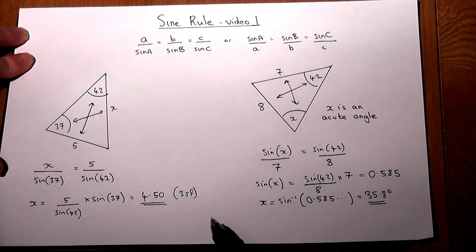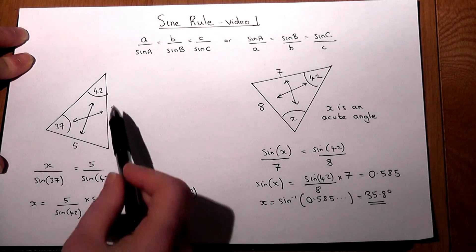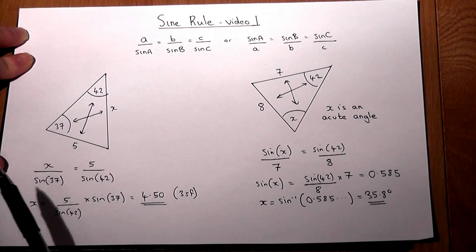In the second video, we look at other cases including finding obtuse angles. There we go - the two examples: finding a missing side or finding a missing angle.